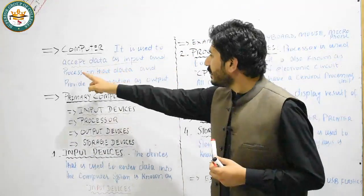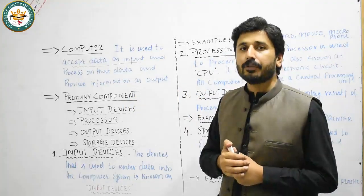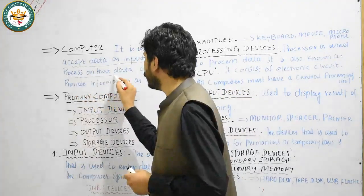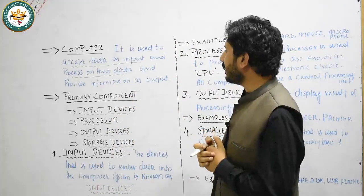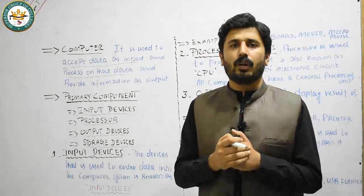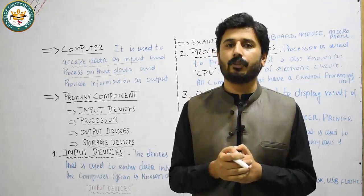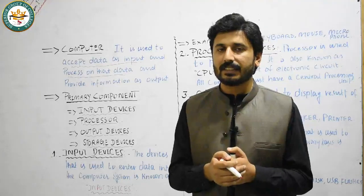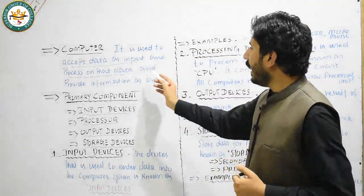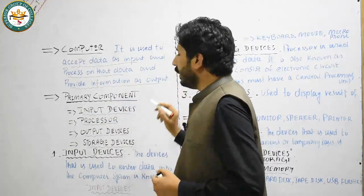The computer accepts data as input and processes on that data. Data and information exist in different shapes. There is a difference between data and information. And the computer provides information as output to the user.